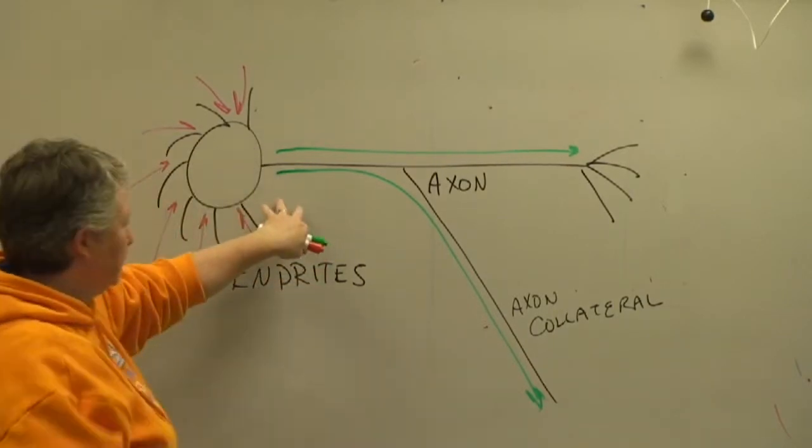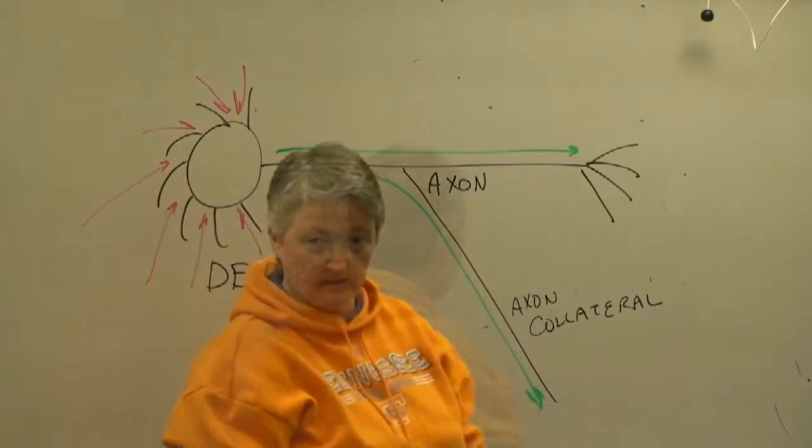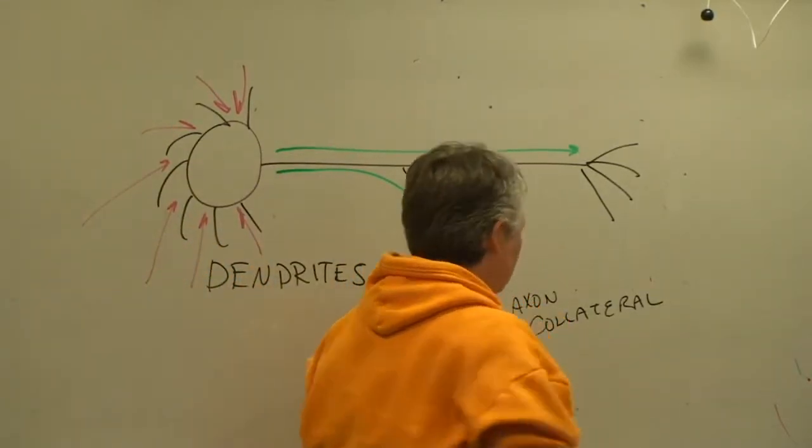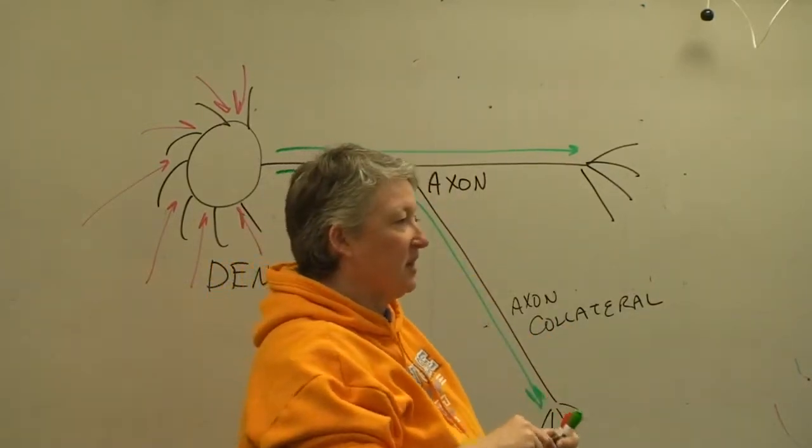But notice that in this particular type of neuron, they don't branch from here. They branch further along on the axon. You could have hundreds of these, hundreds of axon collaterals.